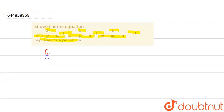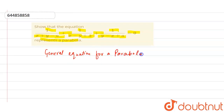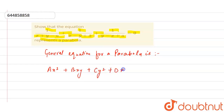The general equation for a parabola is: ax² plus bxy plus cy² plus dx plus ey plus f equals 0. This is the general equation for a parabola.